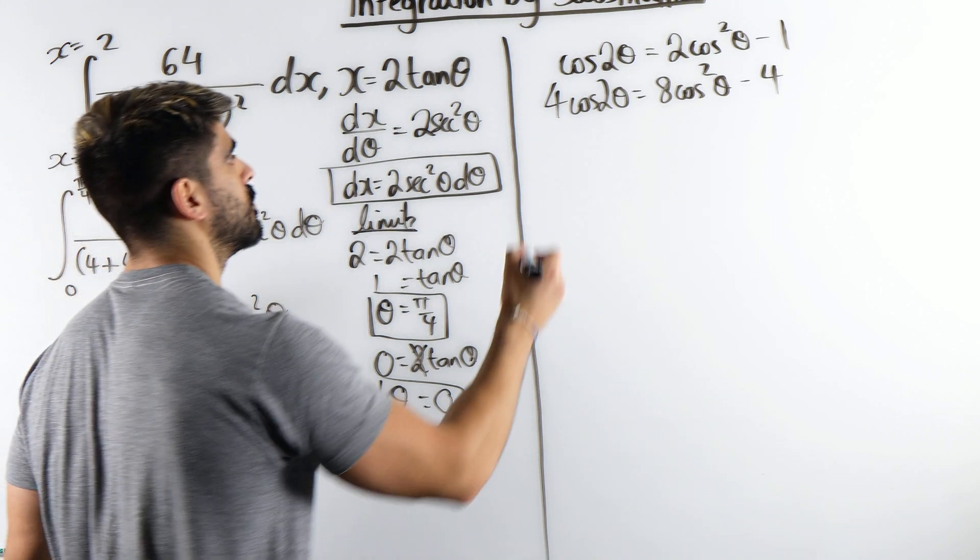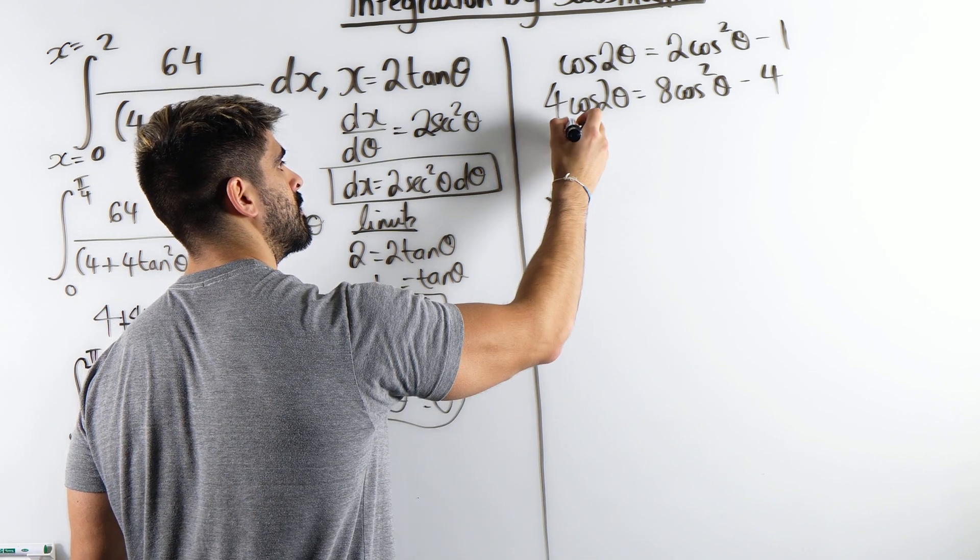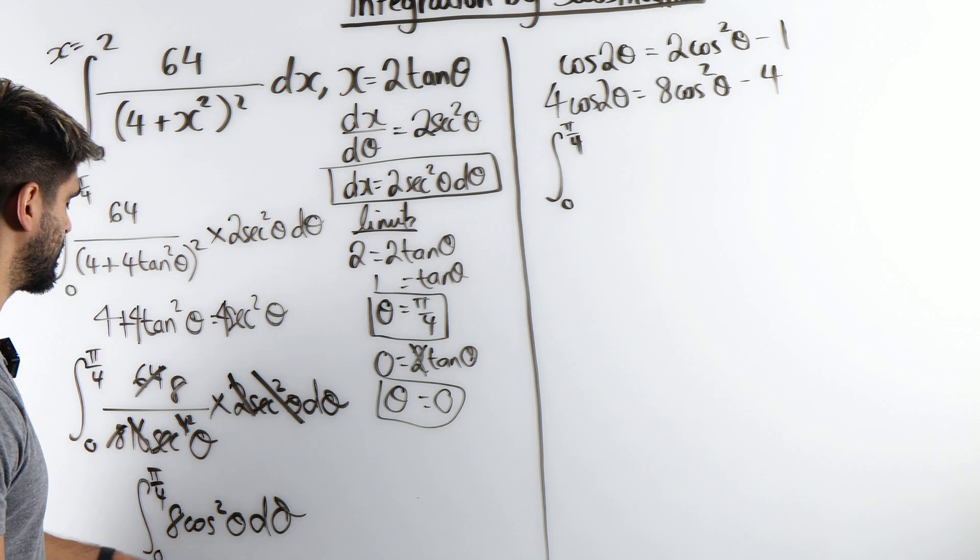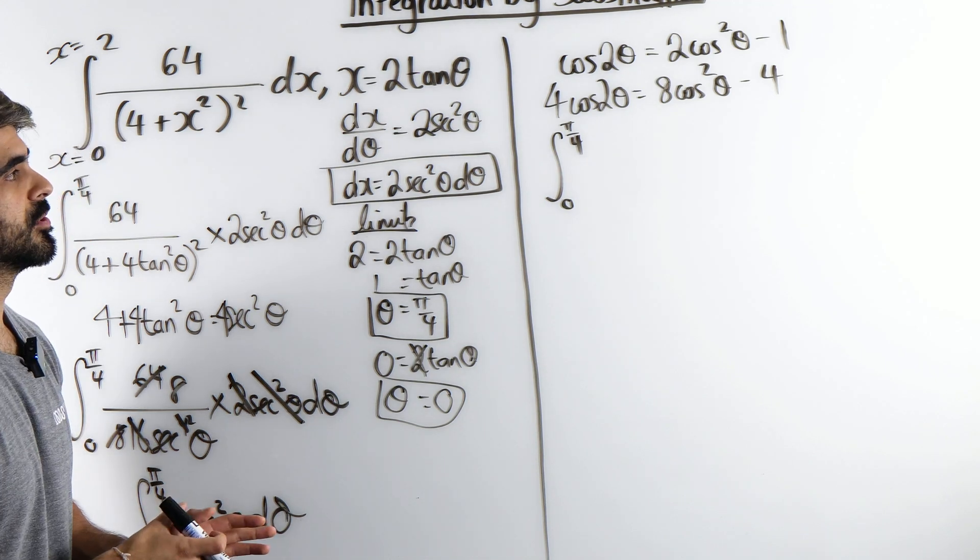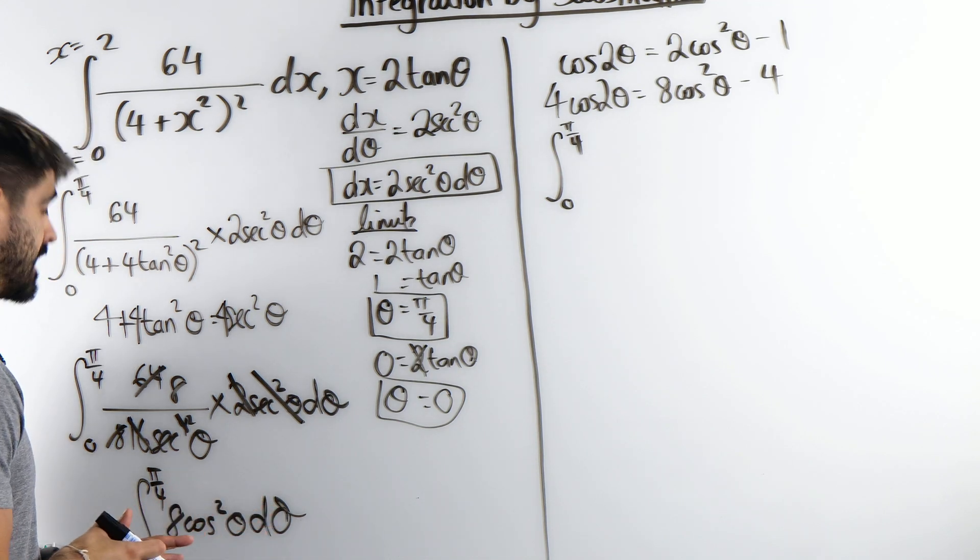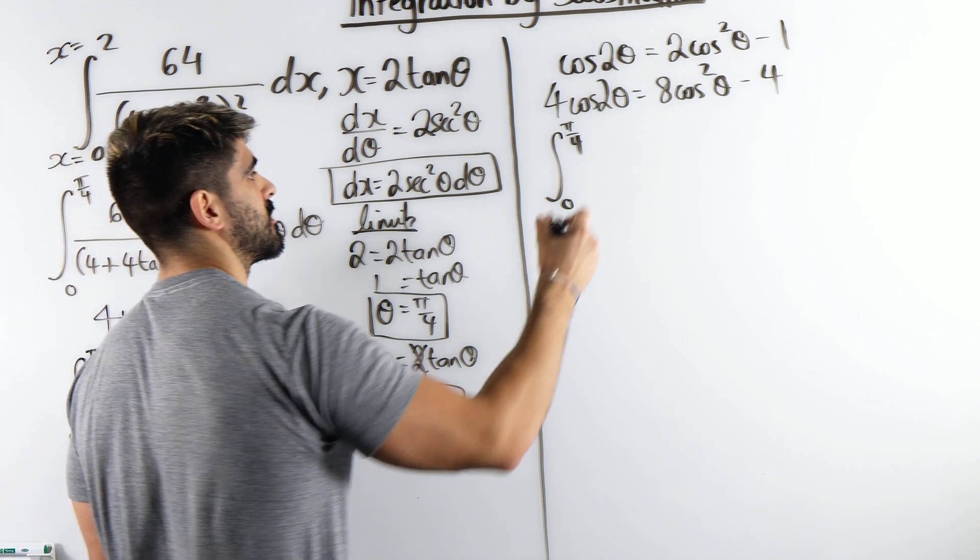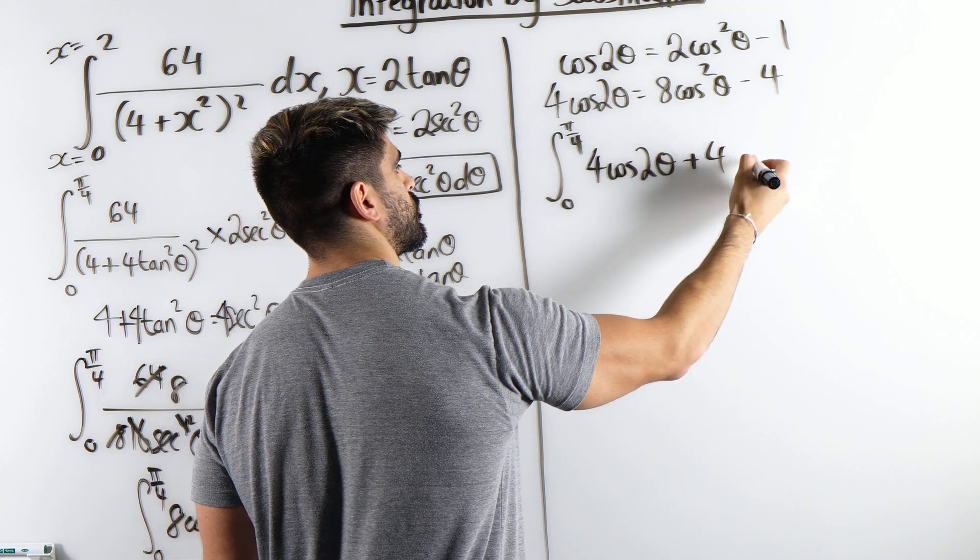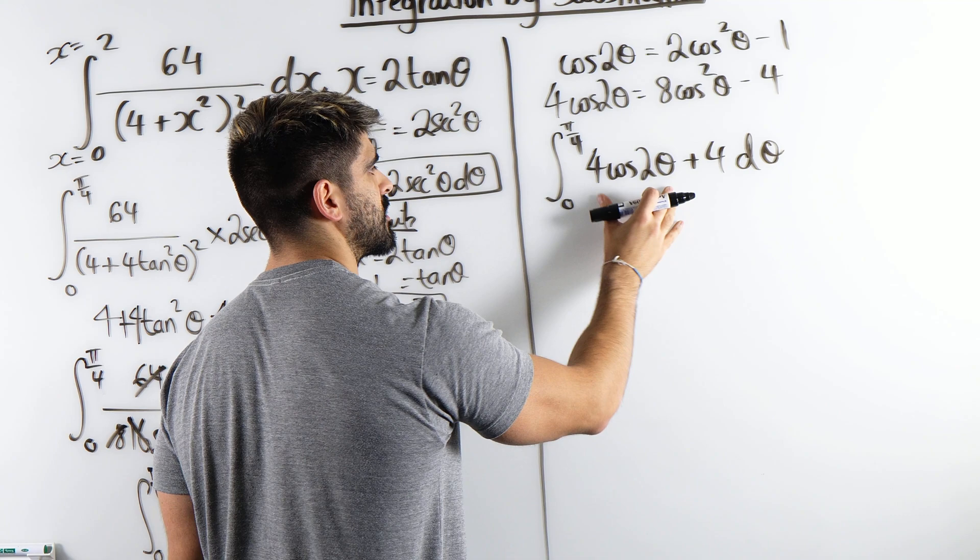So we're going between 0 and pi over 4. I'm glad they gave limits because if you had to just integrate this without the limits, it would have gone hella messy. But anyway, where are we? 4 cos 2 theta plus 4. Now we need to integrate this.